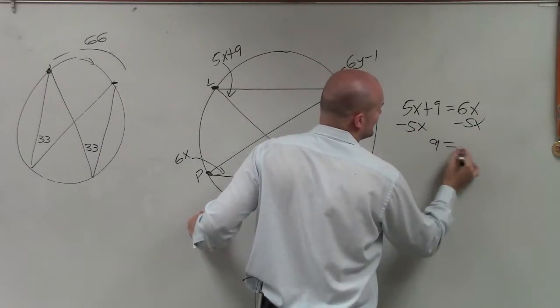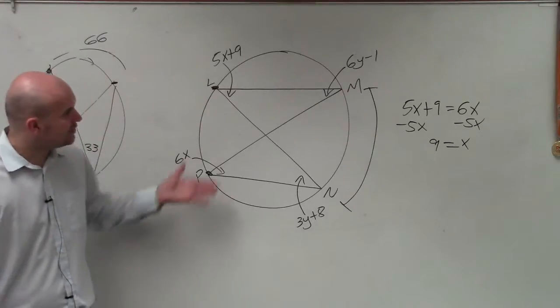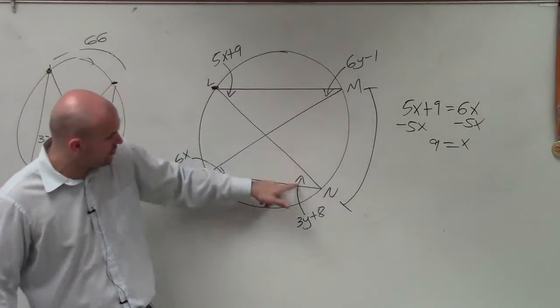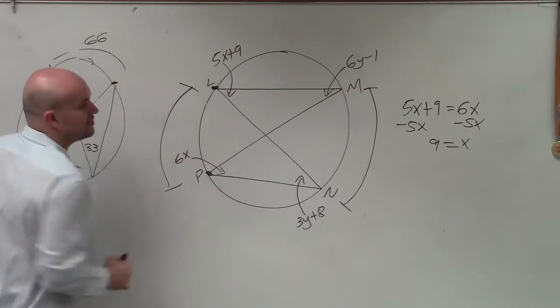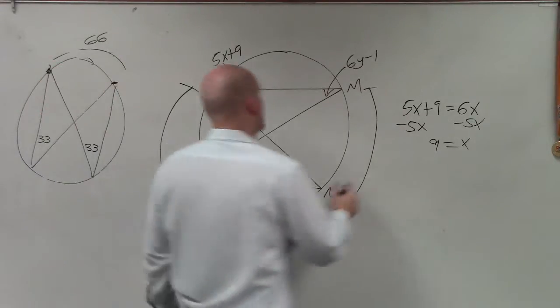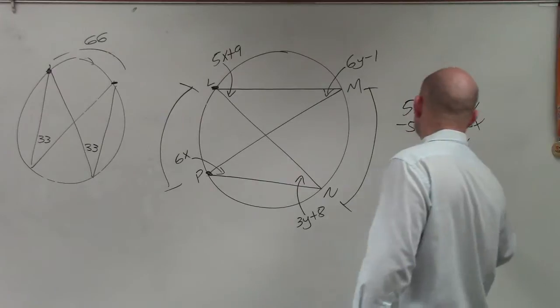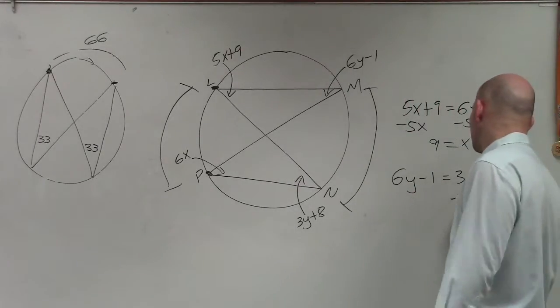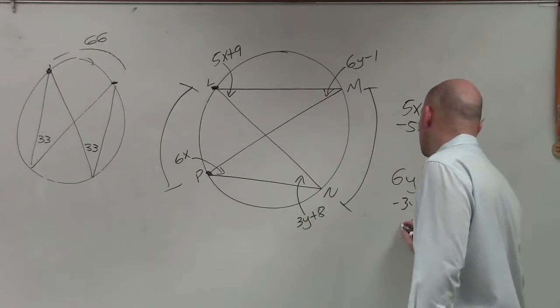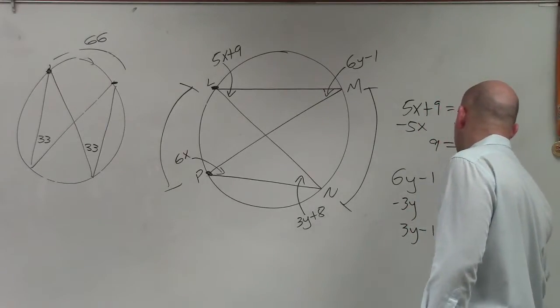and I have 9 equals x. Now to solve for y, we look at these two y's, and we notice that these two y's also have an arc that they share. So therefore, we can set them equal to each other. So I say 6y minus 1 equals 3y plus 8. Now again, I solve for y. I subtract 3y on both sides. So I have 3y minus 1 equals 8.